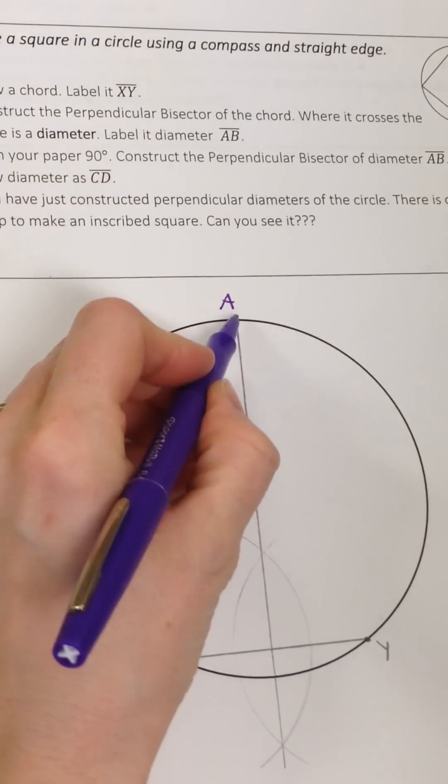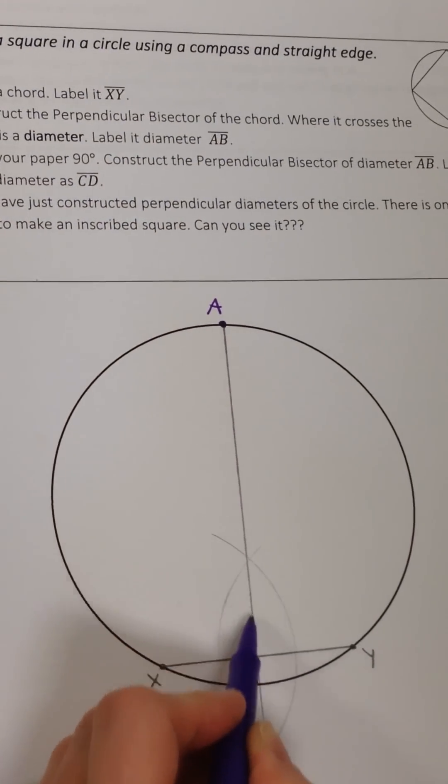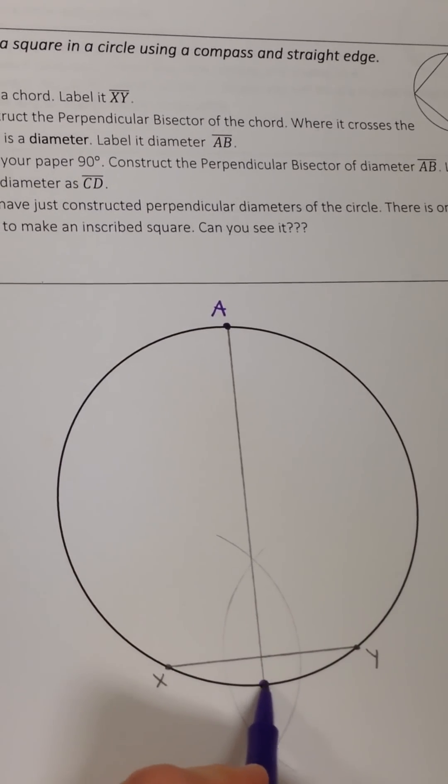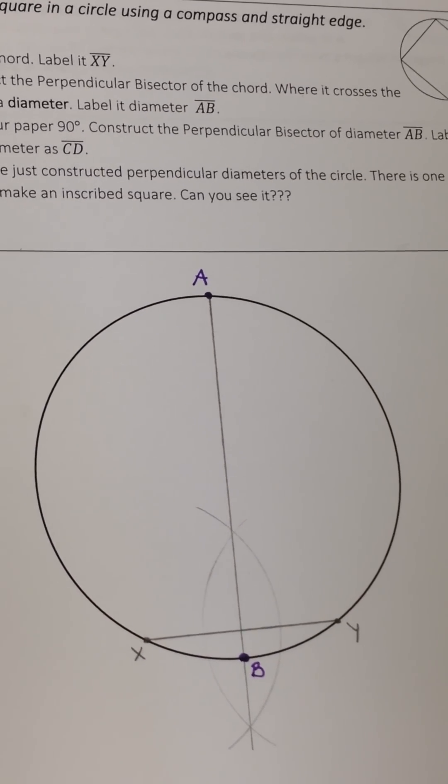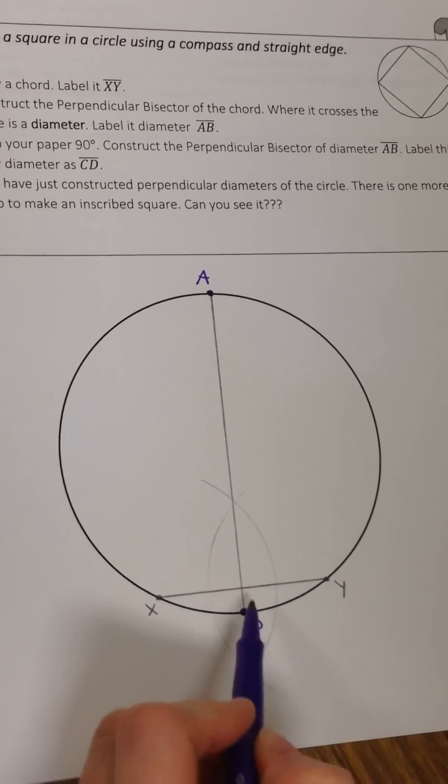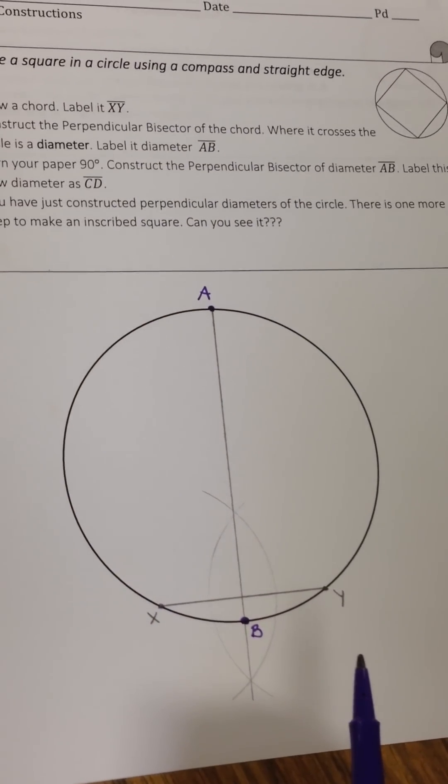And then down here we've got a lot of crosses. Where it crosses the circle down here is going to be B. Okay, so that's a diameter because we made sure it was perpendicular to a chord, and we talked about that before.